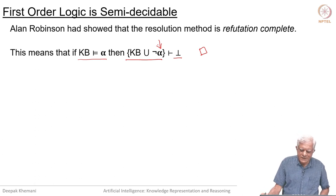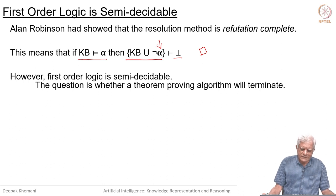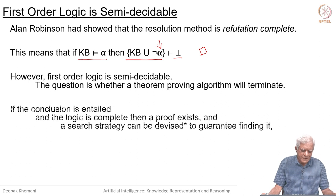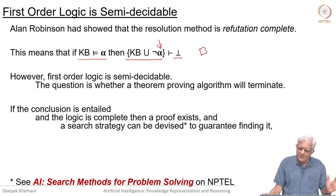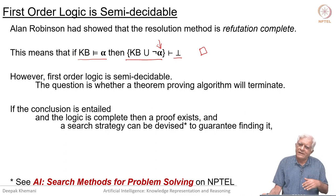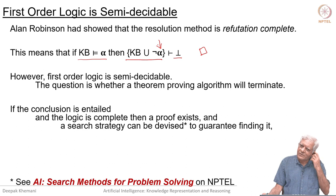The question we want to address is about termination. Decidability is about termination: given any problem, will your program terminate or not? It has been shown that first-order logic is semi-decidable. It turns out that if the conclusion is entailed and the logic is complete — for example, using the resolution refutation method — then a proof exists and a search strategy can always be devised to find that proof. Even in resolution, if you go down one path as in backward chaining, you might end up in an infinite loop. But you can think of strategies closer to breadth-first search that are guaranteed to find solutions when they exist.